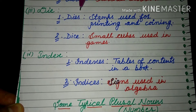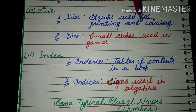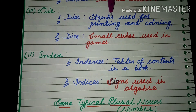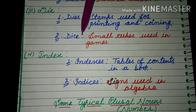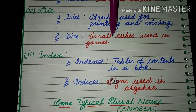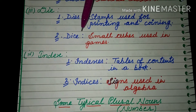Next is 'die'. The first plural is 'dice', meaning stamps used for printing and coining — the stamp used when printing paper or minting coins, that is called 'dice'. Another plural is also 'dice', meaning small cubes used in games — the small cubes used in games are also called 'dice'.